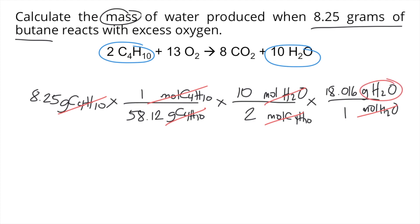And finally, you have your desired unit, which is grams of water. So all you have to do now is solve this entire thing in your calculator. So 8.25 multiplied by 1 divided by 58.12. And then you multiply by 10 divided by 2. And then you multiply by 18.016 divided by 1.